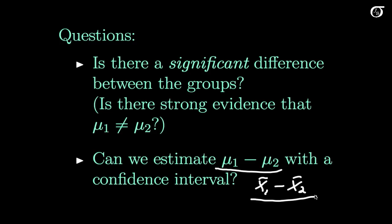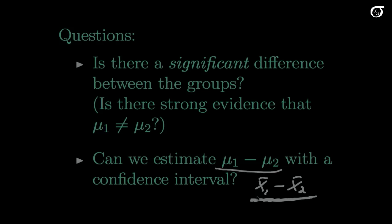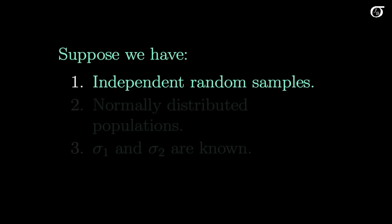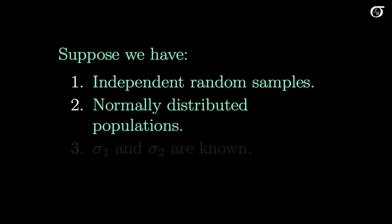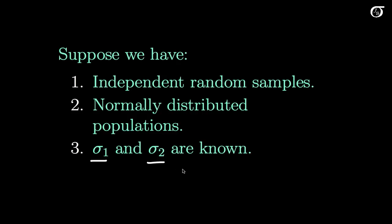If we want to do any statistical inference techniques, we need to know something about the sampling distribution of x̄1 minus x̄2. Suppose we have independent random samples from the populations and normally distributed populations. At first, we're going to assume that we know σ1 and σ2 — the population standard deviations. It would be a very rare case where we actually know those, so we'll have to do something different in the real world.